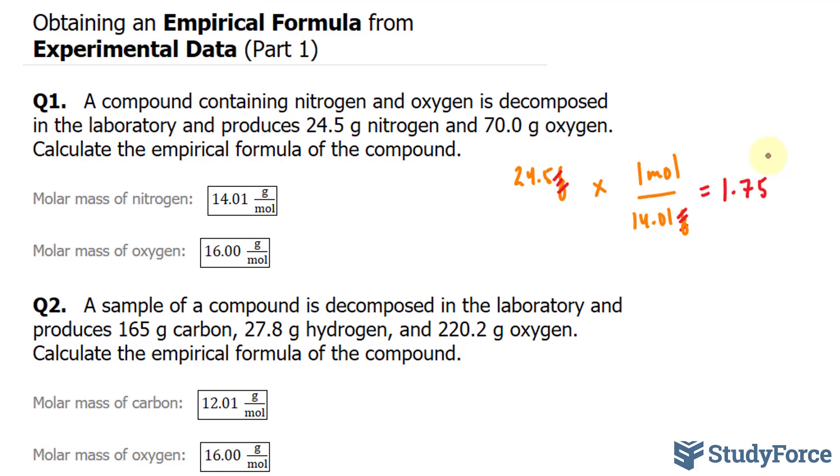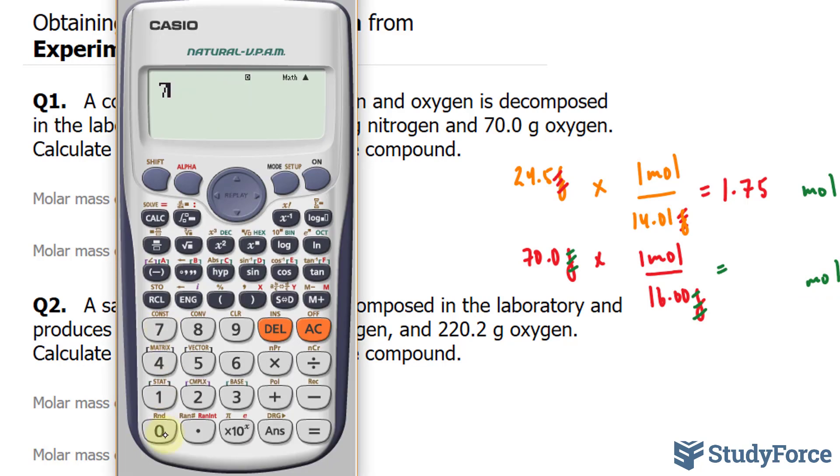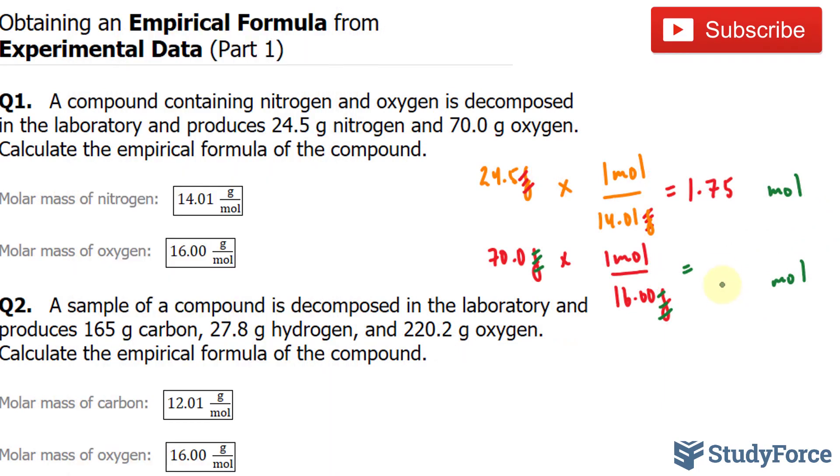Let's do the same thing for oxygen. We have 70.0 grams times 1 mole over 16.00 grams. Once again, the grams units cancel out which is what we want and we end up with moles. Using our calculator, 70 divided by 16 gives me 4.38 moles.